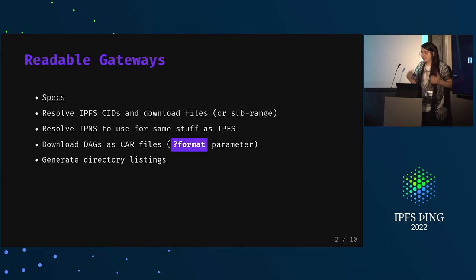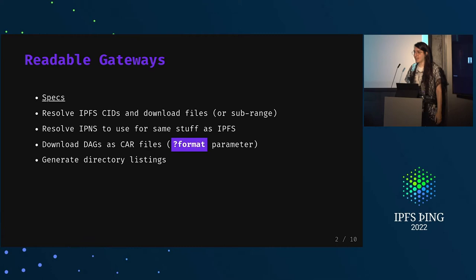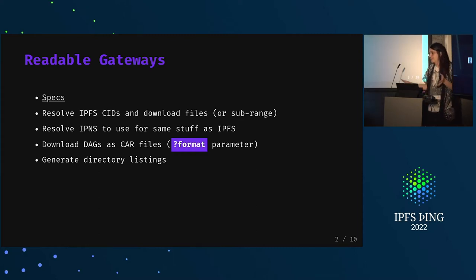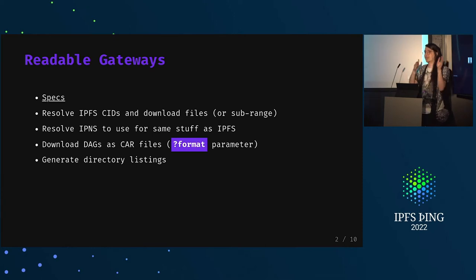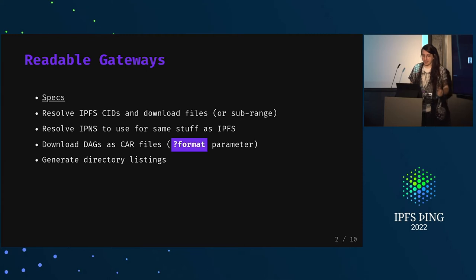For readable gateways, we have a spec now, which is really great. I can see the spec and see what's available there, and there's some stuff I didn't know existed, which is cool. Generally, we're resolving IPFS CIDs to some files or some sort of data, we might be getting ranges out of it, some other niceties. And similarly, we're resolving IPNS and seamlessly doing that pathing.